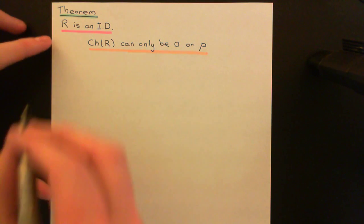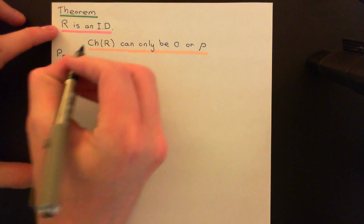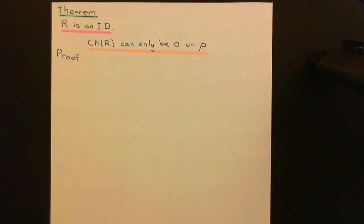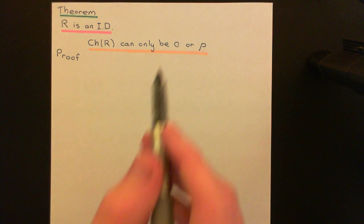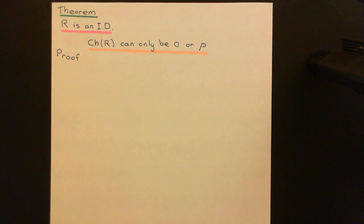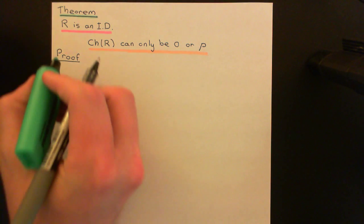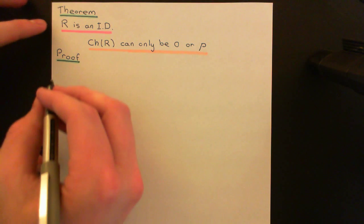How are we going to prove this? The proof is very simple — we're going to do it by proof by contradiction. We're going to assume that the characteristic of our ring is a composite natural number, and prove that it actually cannot be the characteristic, which would be a contradiction.